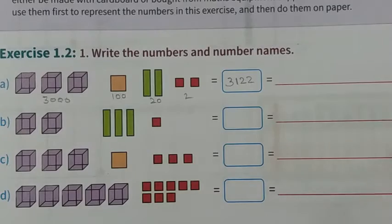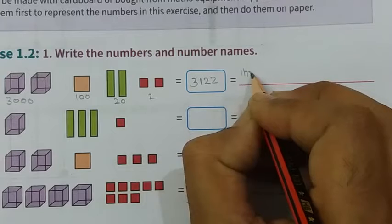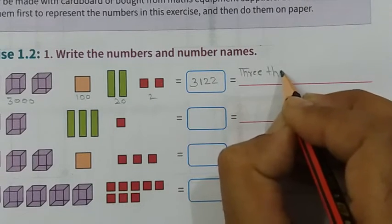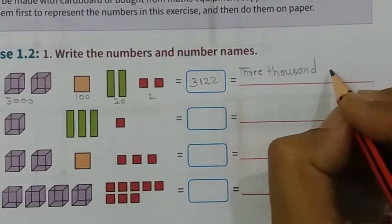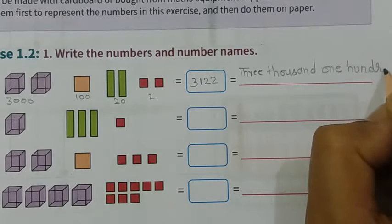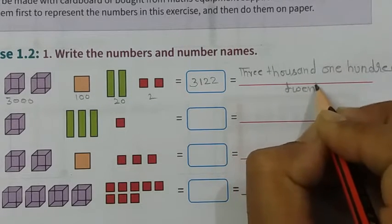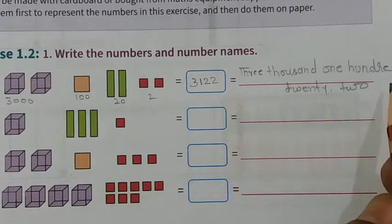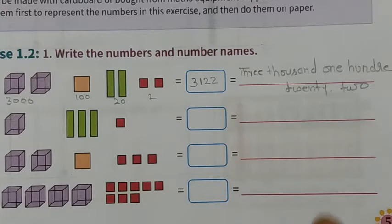Now you have to write the name. What is this? 3000. Three thousand one hundred twenty two. It is your answer.